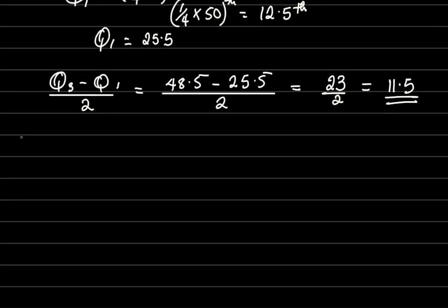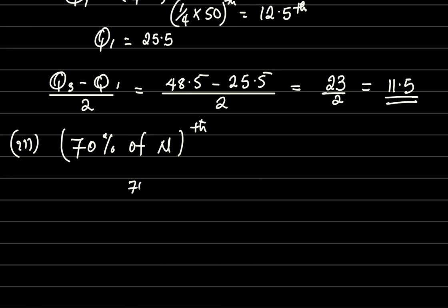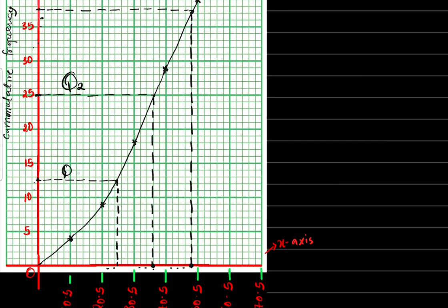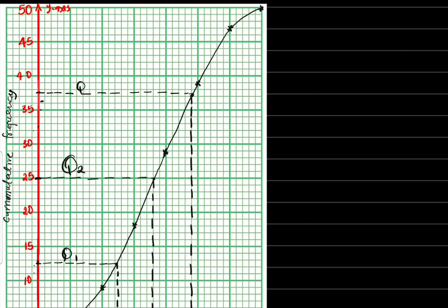The next part asks for the 70th percentile. To get this, we calculate 70 percent of n: 70 over 100 times 50, which gives the 35th position. I go to the graph and locate 35 on the cumulative frequency axis. I trace it horizontally to where it touches the curve, using a ruler carefully.